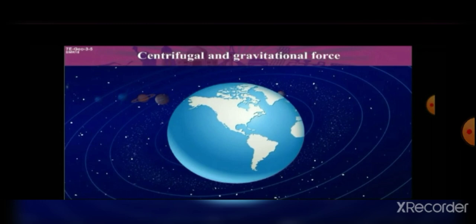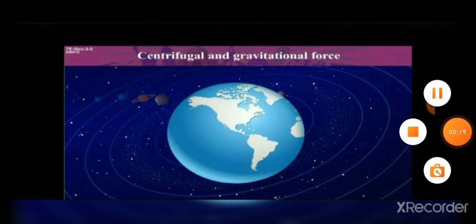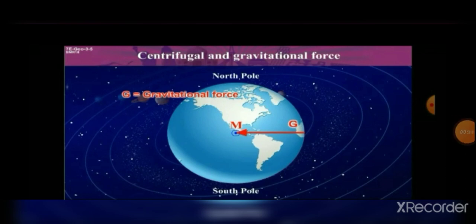Due to the centrifugal force, any object on the Earth would be thrown into space. Do you know how a rocket works? Yes, it works on centrifugal force. You might be thinking why we are so firmly stable on the Earth — because gravitational force is acting on the Earth's surface at the same time. Gravitational force works towards the center, whereas centrifugal force works against the center — away from the center.